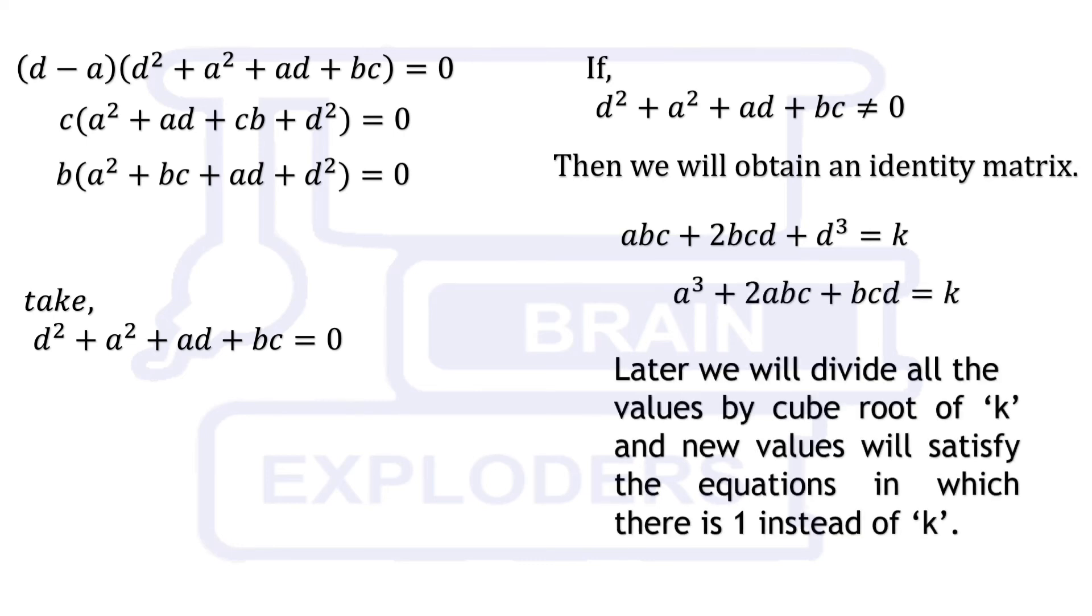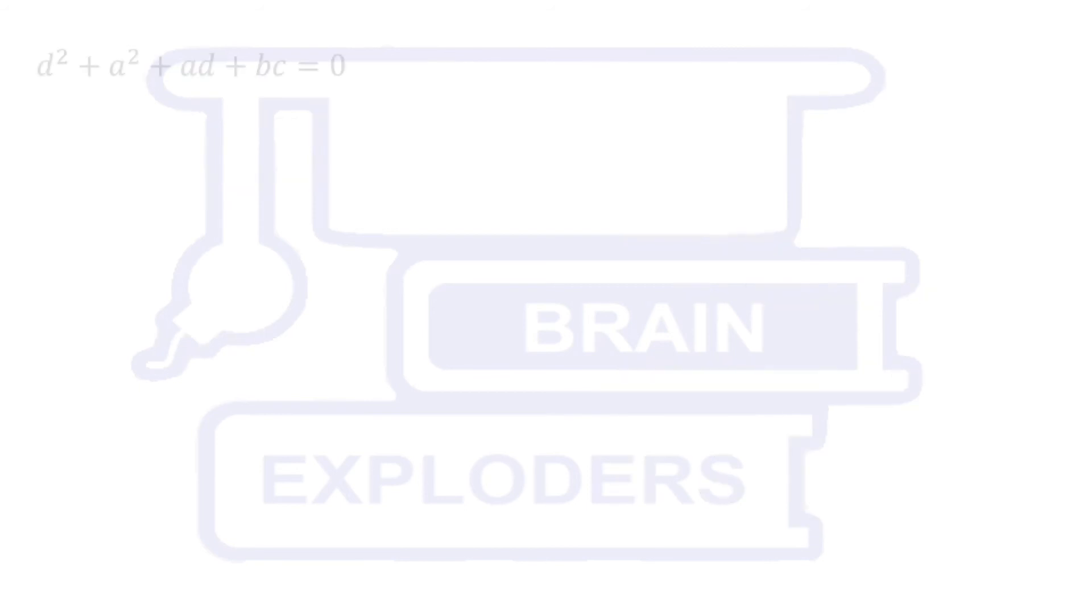Here also we have to find any set of values satisfying these equations. In the first 2 equations, take k instead of 1 for simplicity, which we will later manage to get 1 again. Give any values to A and D, and then find any pair of values for B and C.